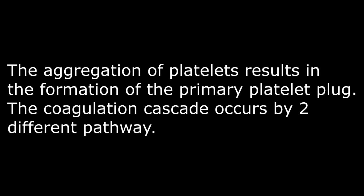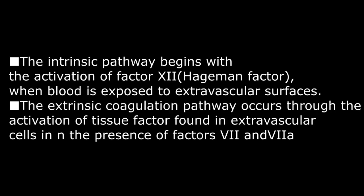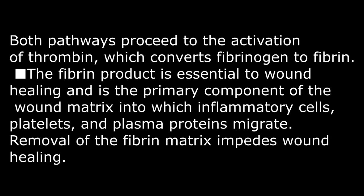The coagulation cascade occurs by two different pathways. The intrinsic pathway begins with the activation of factor 12, the Hagemann factor, when blood is exposed to extravascular surfaces. The extrinsic coagulation pathway occurs through the activation of tissue factor found in extravascular cells in the presence of factors 7 and VIIA. Both pathways proceed to the activation of thrombin, which converts fibrinogen to fibrin. The fibrin product is essential to wound healing and is the primary component of the wound matrix into which inflammatory cells, platelets, and plasma proteins migrate.